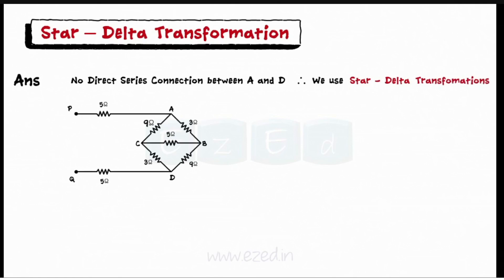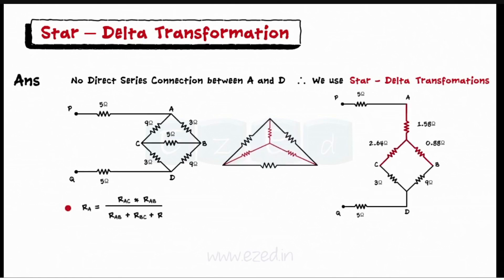Let's first convert delta of 9 ohms, 3 ohms and 5 ohms into equivalent star structure. Using the delta to star conversion formula, we get the three resistors as RA equals 1.58 ohms,